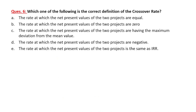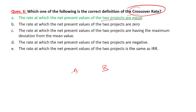What is the correct definition of crossover rate? It is the rate at which the net present value of two projects are equal — so project A and project B both have the same NPV. It is a unique concept that not many people study, but from an MCQ objective exam point of view it is very important. Unique concepts like this have a higher chance of appearing in the paper.